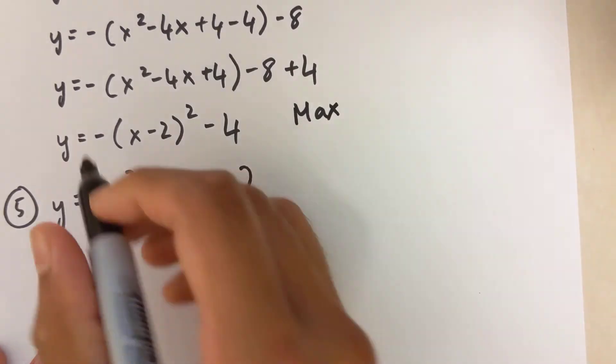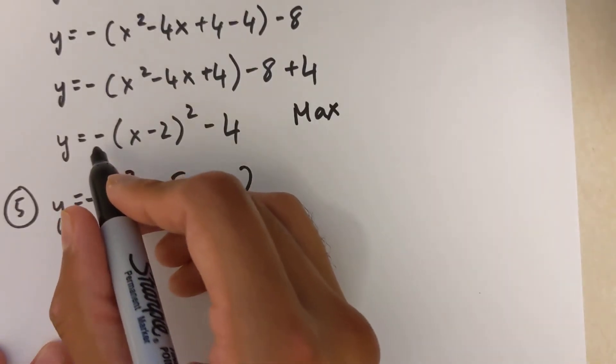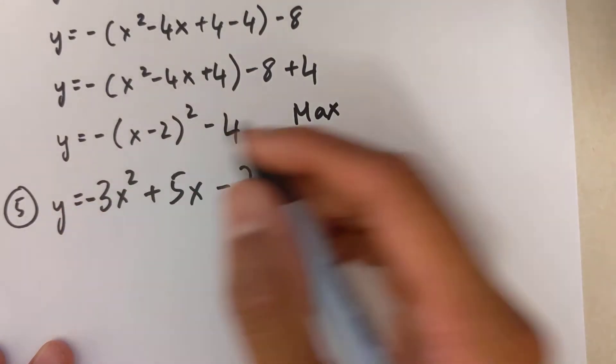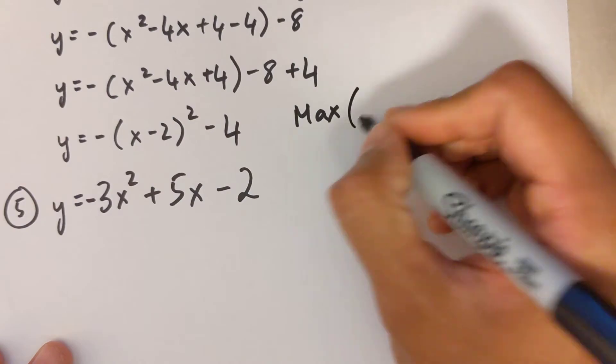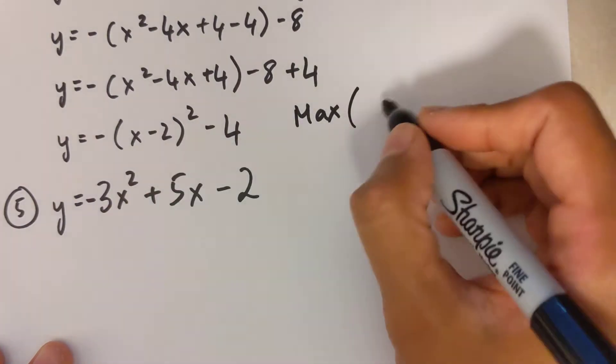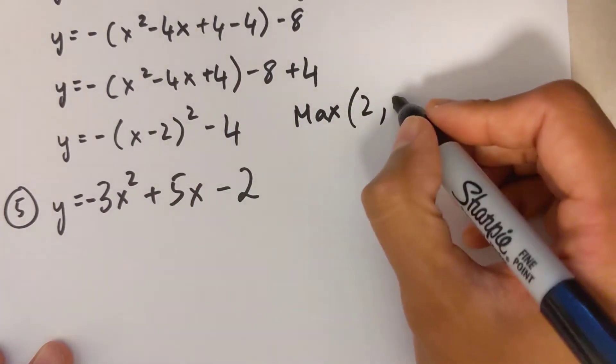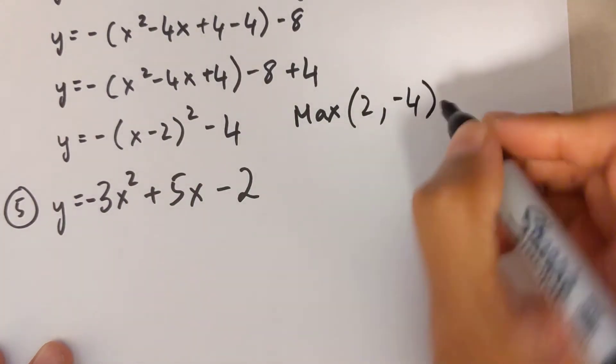Combining outside terms: negative 8 plus 4 is negative 4. Here the a value is negative, which makes this a maximum. Anytime your a value is negative it's a max; positive means a min. The vertex is at x equals 2, y equals negative 4.